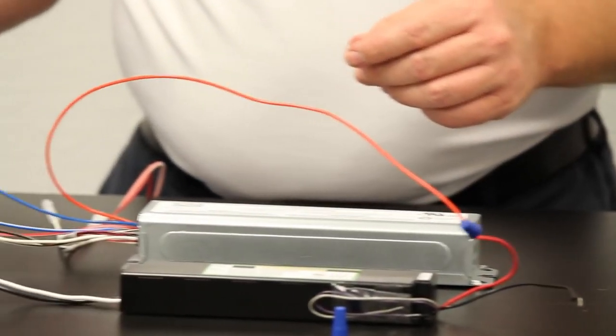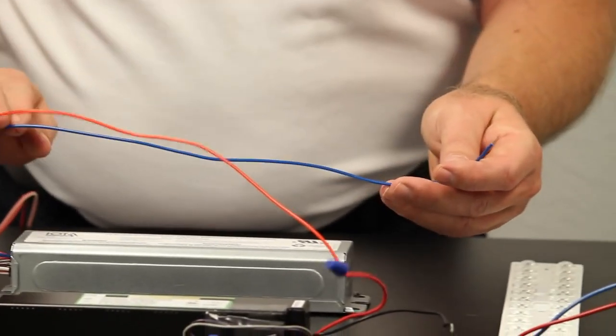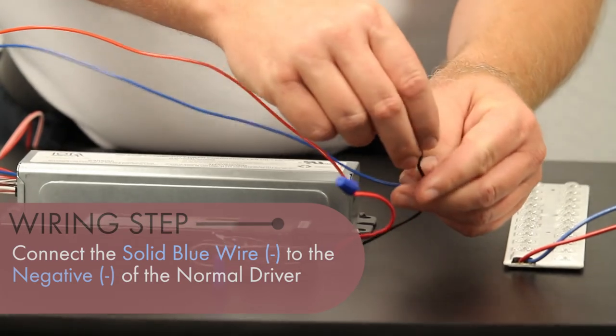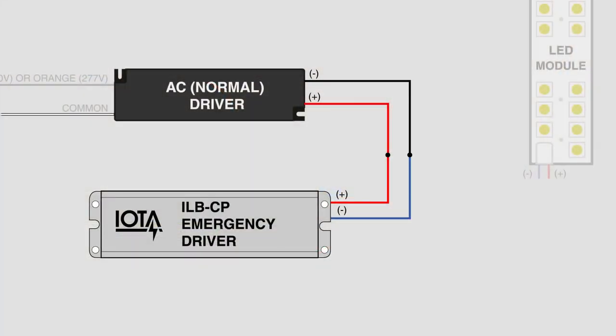Next, we get the solid blue wire, which is the negative connection from the ILBCP. We will connect that to the negative connection of the normal driver. In this case, the wire is black.